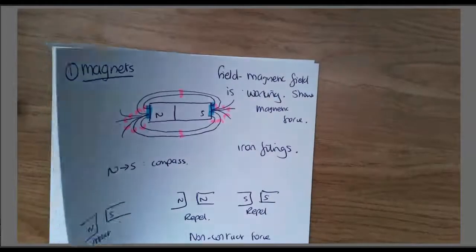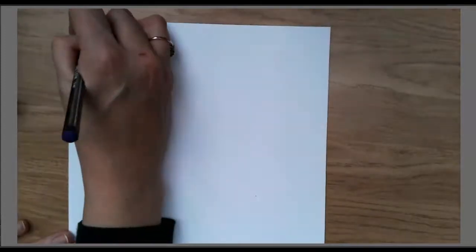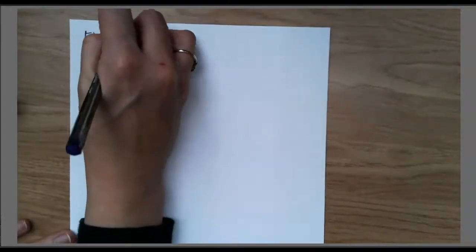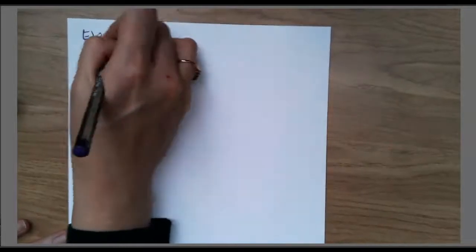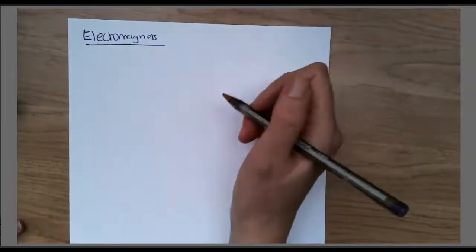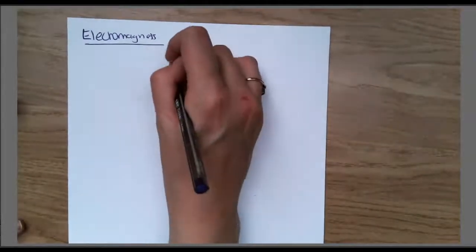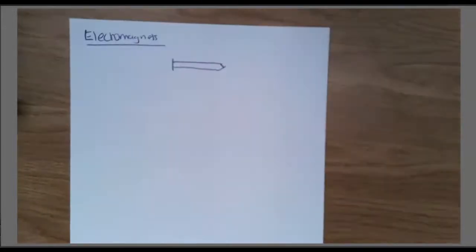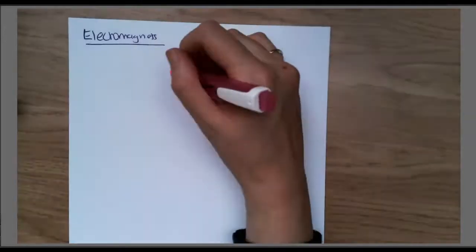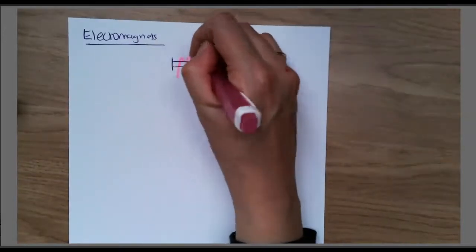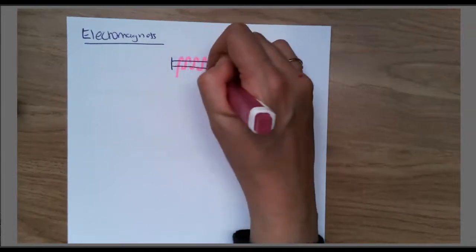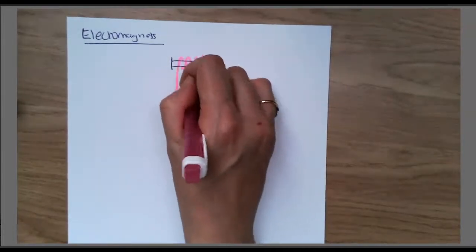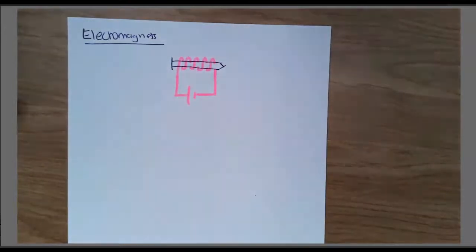Next, we're going to have a quick look at electromagnets. When you have electricity, the wire becomes magnetic. What we did was we did an experiment where we had an iron nail like so, and we put a wire around it, a coil of wire.